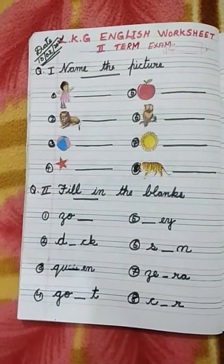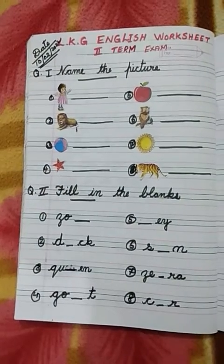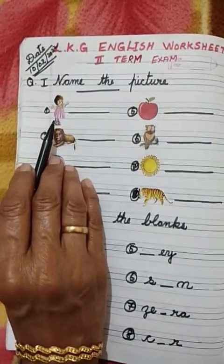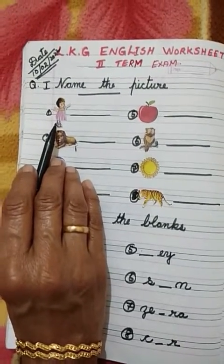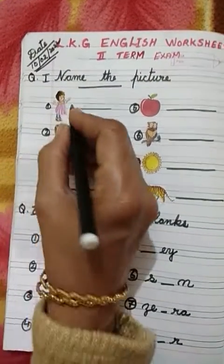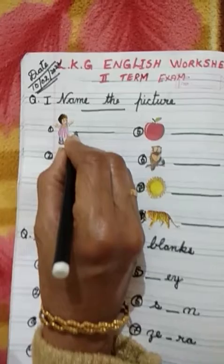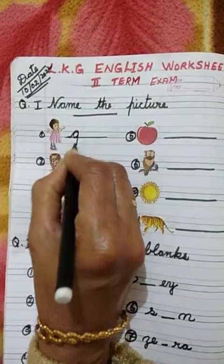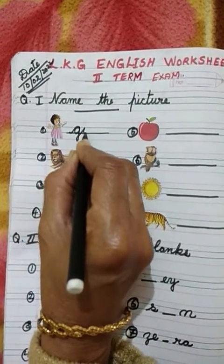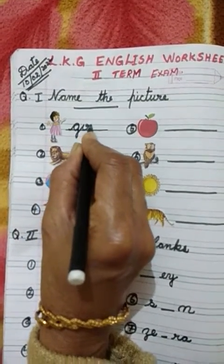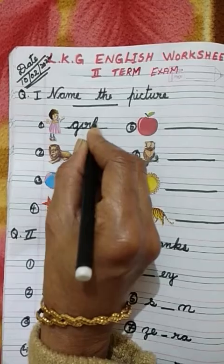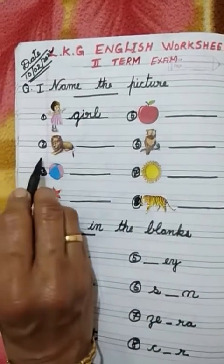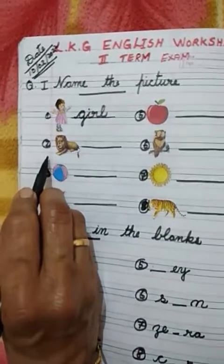First, we will identify the picture — a picture of a girl. Then we have to write here: G-I-R-L, Girl. Number 2.